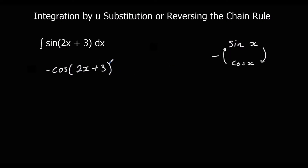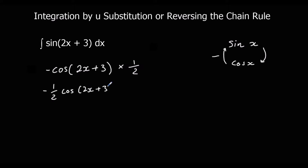That means dividing by the bracket differentiated. The bracket differentiated in this case is 2, so we divide by 2 — or times by a half. So that gives us minus a half cos(2x + 3) plus c.